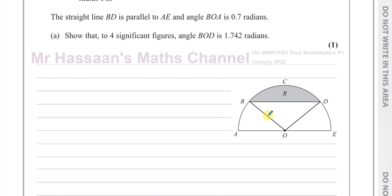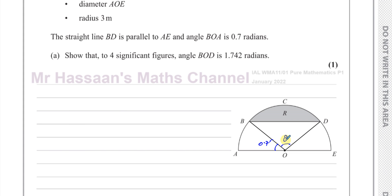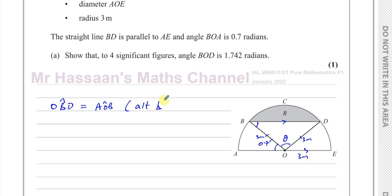We know that this angle is 0.7 radians, and we've got to find this angle here. The radius is 3 meters, so this is 3 meters, and that means this is also 3 meters, and this is also 3 meters — it's the radius. We also know that this line is parallel to this line, so we can say angle OBD is equal to angle AOB, because they are alternate angles.